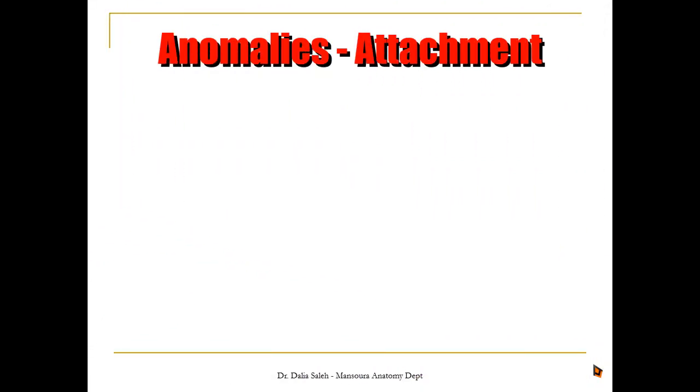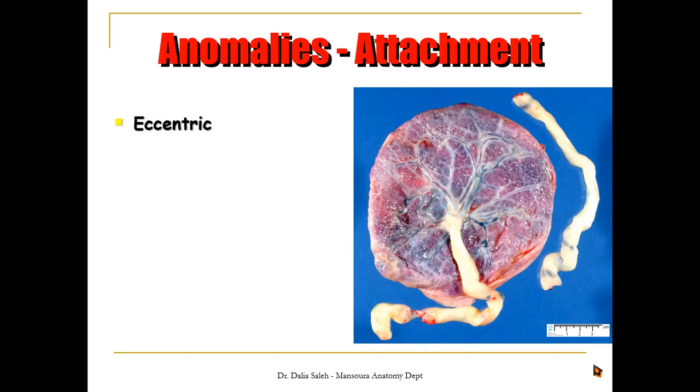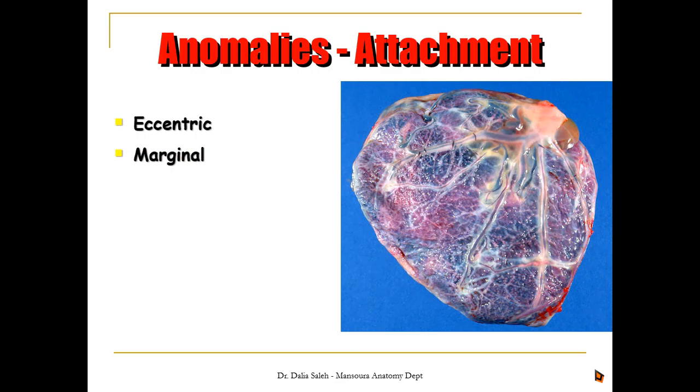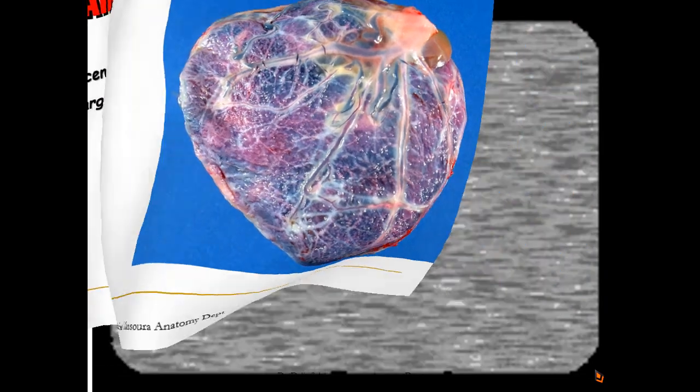Finally, there are anomalies of the attachment of the umbilical cord to the placenta. Normally it is attached to the center of the fetal surface of the placenta. Sometimes there is eccentric attachment, where the cord is not exactly at the center point. Other times the attachment is at the margin of the placenta, which we call marginal attachment. This is the end of the presentation — thanks for listening, and if you like it please subscribe, like, and share.